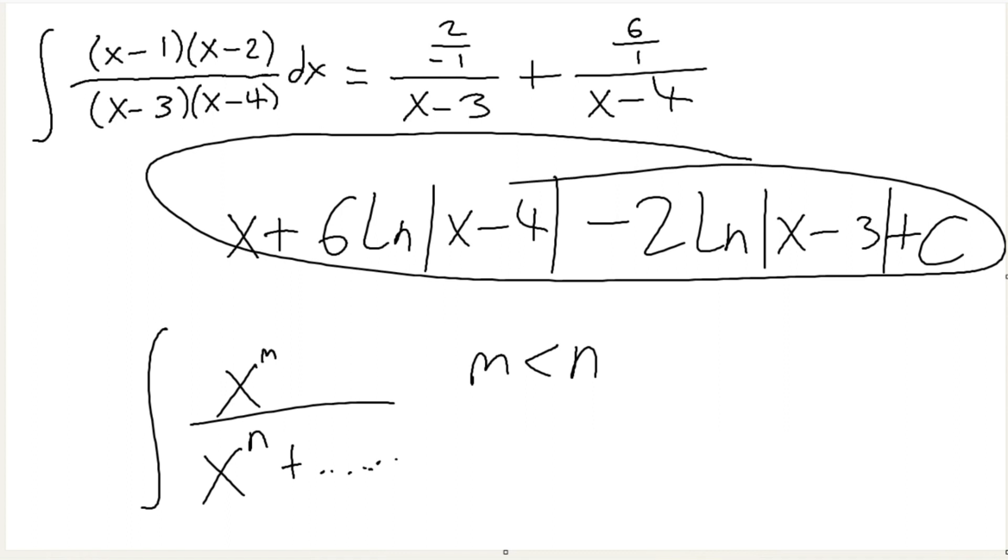So Heaviside method mainly only works for polynomials like this, or some other polynomials. The polynomial in the denominator has to be higher degree than the top, then you can use Heaviside normally. If they're the same degree, then you do it normally but you just add the x. You just add an x, and that's it.